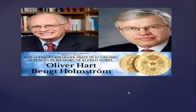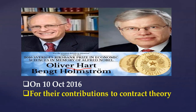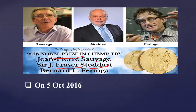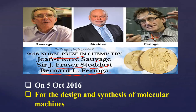The 2016 Nobel Prize in Economic Sciences was awarded on 10th October 2016, jointly to Oliver Hart and Bengt Holmström for their contribution to contract theory. The 2016 Nobel Prize in Chemistry was awarded on 5th October 2016, jointly to Jean-Pierre Sauvage, Sir J. Fraser Stoddart and Bernard L. Feringa for the design and synthesis of molecular machines. The whole prize was split equally into three parts — one-third, one-third and one-third.